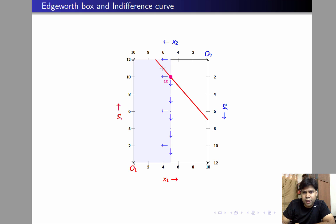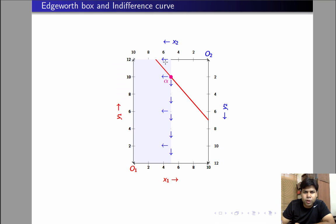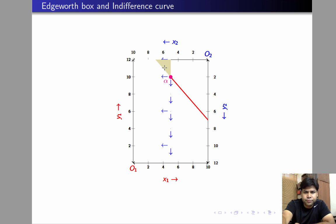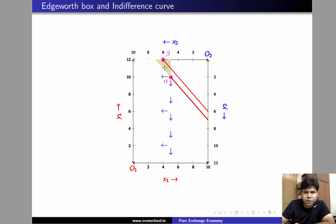The region lying above the indifference curve of individual 1 and to the left of alpha has the property that if we move to any allocation in this region, we'll be making both individuals better off, or at least one of them better off without reducing the satisfaction level of the other. For example, consider a point such as beta. Beta is preferred over alpha by individual 1 because it's on a higher IC, and beta is also preferred over alpha by individual 2 because beta offers him a higher amount of commodity x. Therefore, alpha is not Pareto efficient.